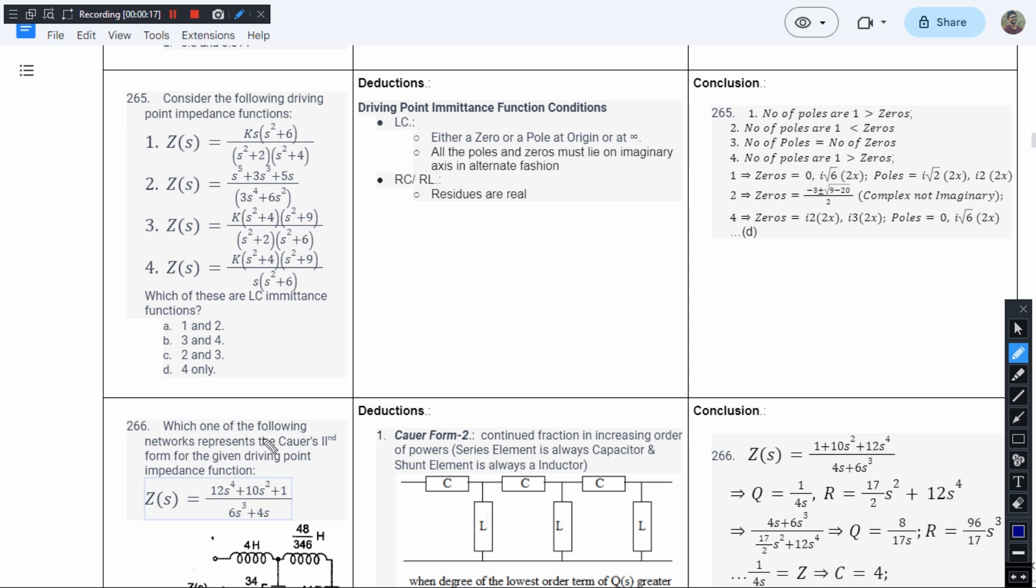The properties of an impedance function to be LC, to be an LC circuit, are: either a zero or a pole at the origin or at infinity. That means you will have to look at the powers.